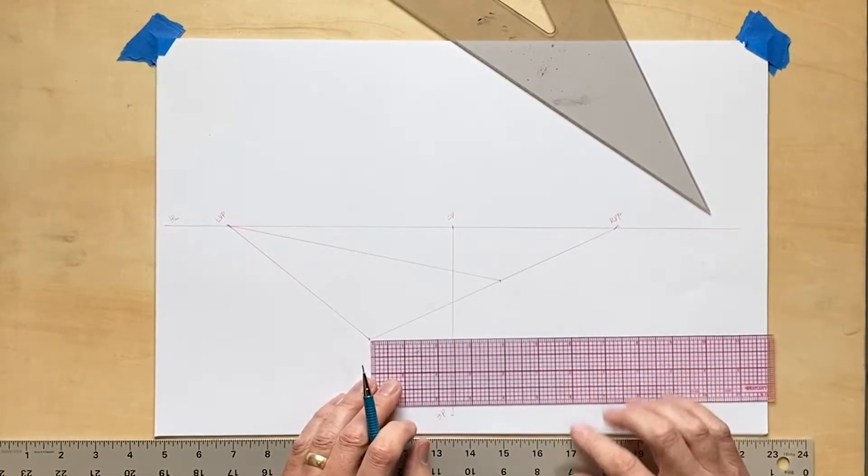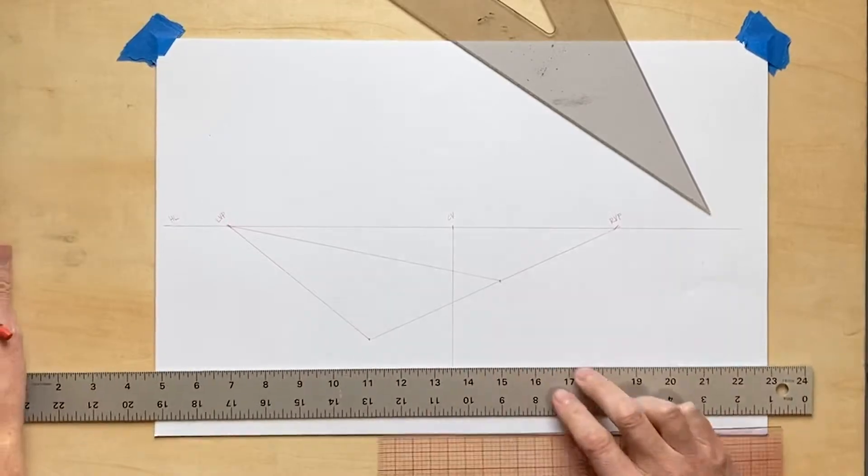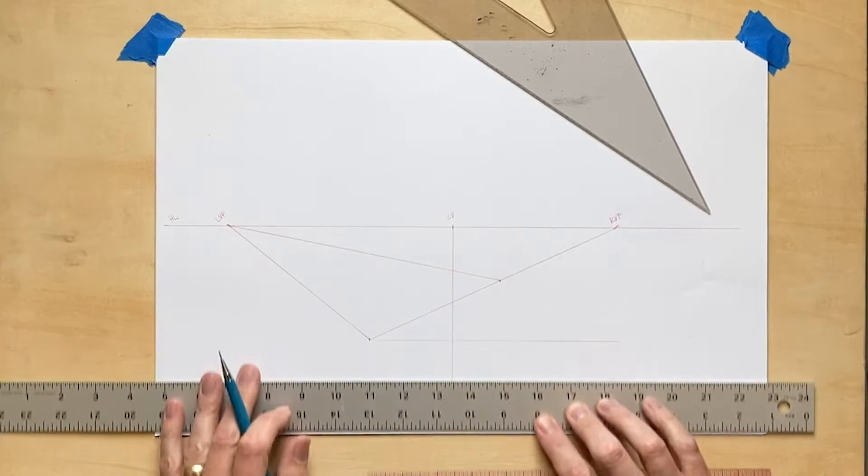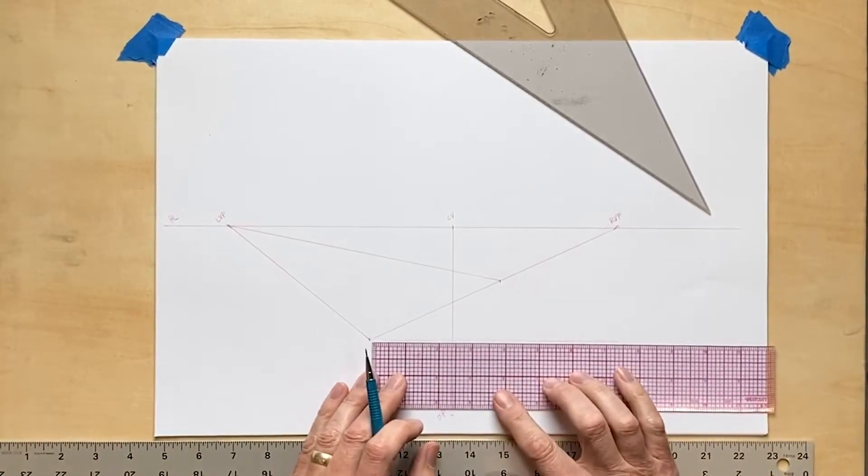Now remember, the rule of perspective says that all parallel lines converge to the same vanishing point on the horizon, so I need to connect that point to that left vanishing point because it runs parallel to that far left side.